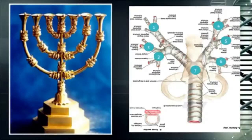He wanted a knop, a bud, and a flower — three sets on each of the candlesticks, one in the middle. We know there were 66 total, just like the 66 books of your Bible. A knop, a bud, and a flower from an almond tree.